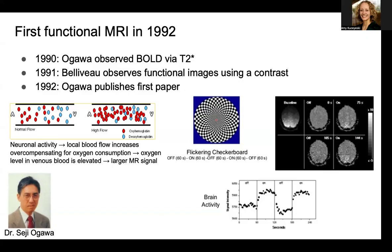When you complete a cognitively demanding task or look at some kind of visual stimuli, there is an upregulation of neural activity in the particular part of the brain that is receiving that stimuli or underlying the cognitive demand. As your neural activity increases, your neurons are going to demand more oxygen and more metabolic input. The vasculature responds and reroutes blood flow to the neurons that are firing. As that oxygenated blood increases to overcompensate for the oxygen consumption, the oxygen level in the venous blood is actually elevated, and that results in a larger MRI signal.